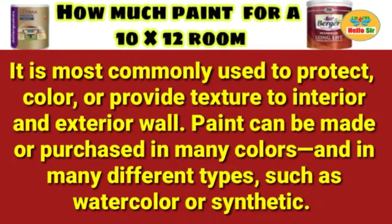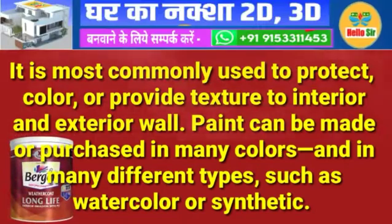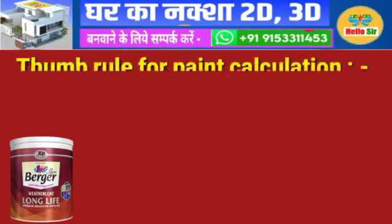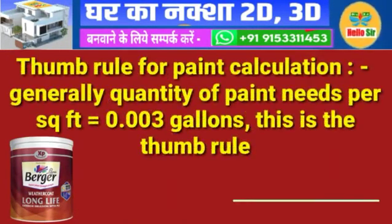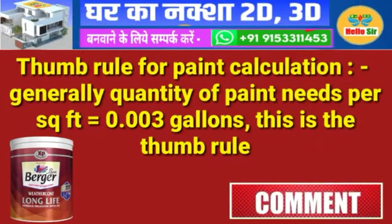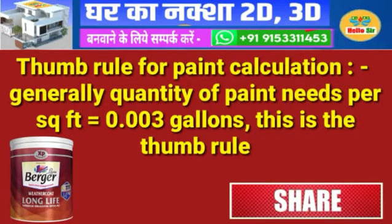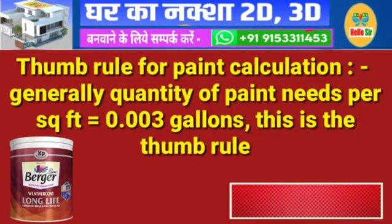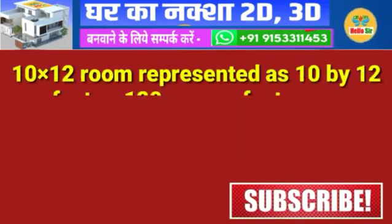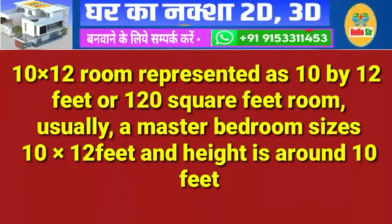Paint can be made or purchased in many colors and in many different types, such as watercolor or synthetic. Here is the thumb rule for paint calculation: generally, the quantity of paint needed per square foot equals 0.003 gallons. This is the thumb rule. Here we discuss a 10 x 12 room.